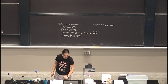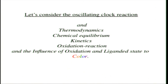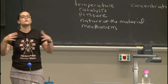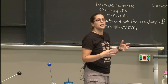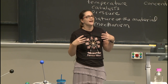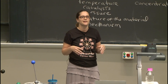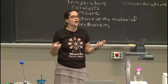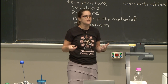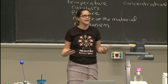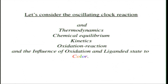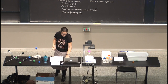Let's think about one example: the oscillating clock reaction. This demo involves thermodynamics, chemical equilibrium, kinetics, acid-base chemistry, and oxidation-reduction — and it has colors. The colors change depending on the oxidation state of the material and its ligand state. Basically, in one demo, you get every unit we've covered in the second half of the course. Every chemical reaction involves thinking about all of these things.